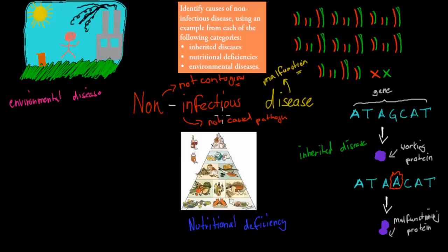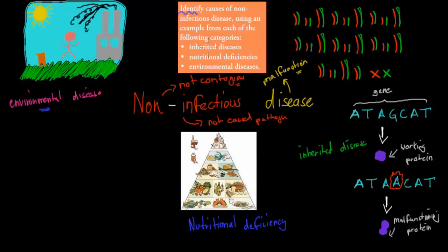There are three different types of non-infectious diseases: environmental diseases, nutritional deficiency diseases, and genetic or inherited diseases. The learning objective requires us to identify and name causes of non-infectious diseases, using an example from each of these three categories.